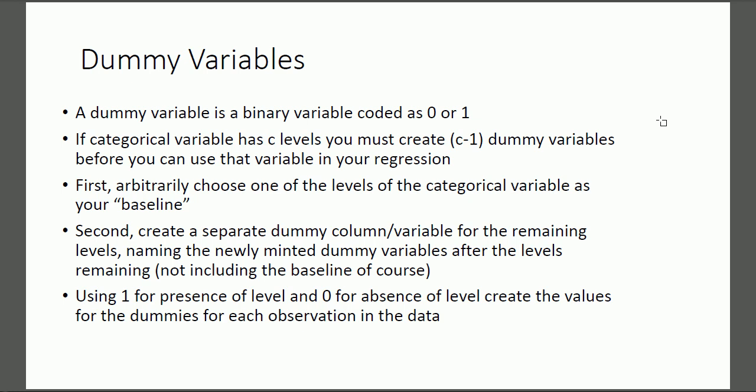Once you've picked the baseline, you create a separate dummy variable — set up as separate columns — for the remaining levels. You'll have C minus one remaining levels, so you make C minus one columns or dummy variables. Name these newly created dummy variables after the remaining levels, not including the baseline. Then use one if that level is present and zero if that level is absent to fill in the values for each observation.